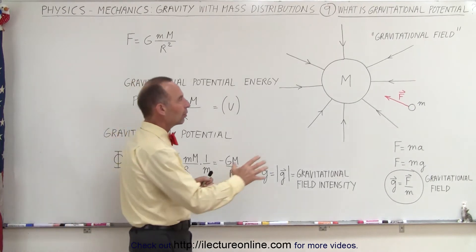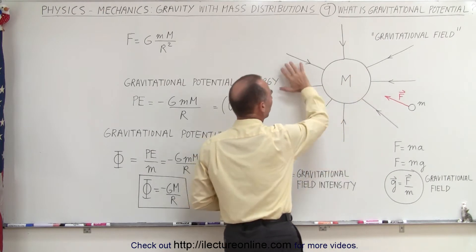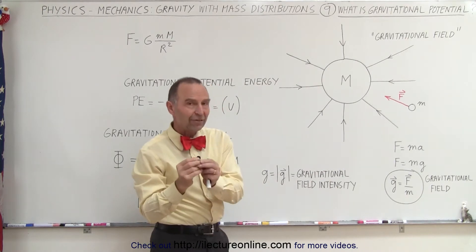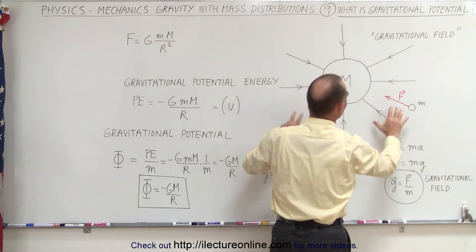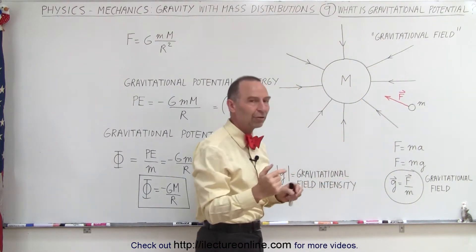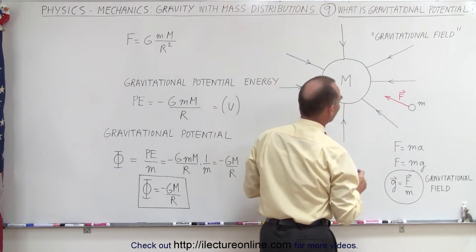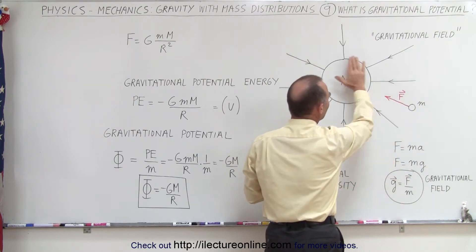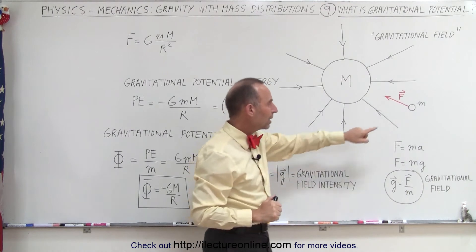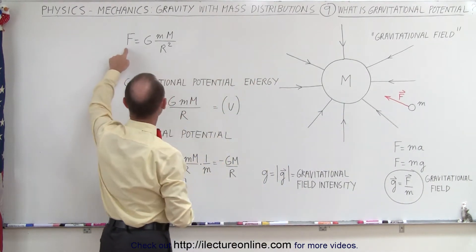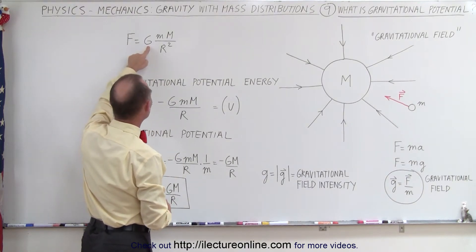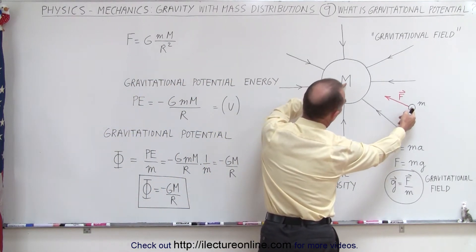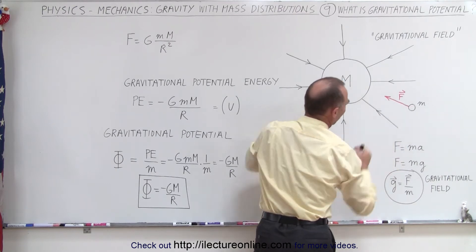Let's take a large mass. Because of that large mass, around it there will be a gravitational field. If we place a very small test mass within that field, that mass will experience a force directed towards the large mass. We need the large mass to be sufficiently large and the small mass sufficiently small so the small mass really has no influence on the large mass. This force can be calculated using the equation of gravity: F equals G, the gravitational constant, times the product of the two masses divided by the distance between them squared — specifically the distance R between the two centers of mass.